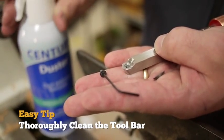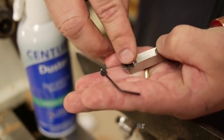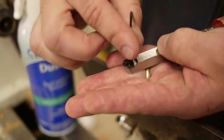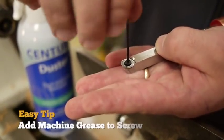Use this opportunity to clean the tool bar really well with that canned air. If you're turning a lot of green wood, the moisture can cause the screws to seize up. So it's a good idea to add a bit of machine grease while you're at it.